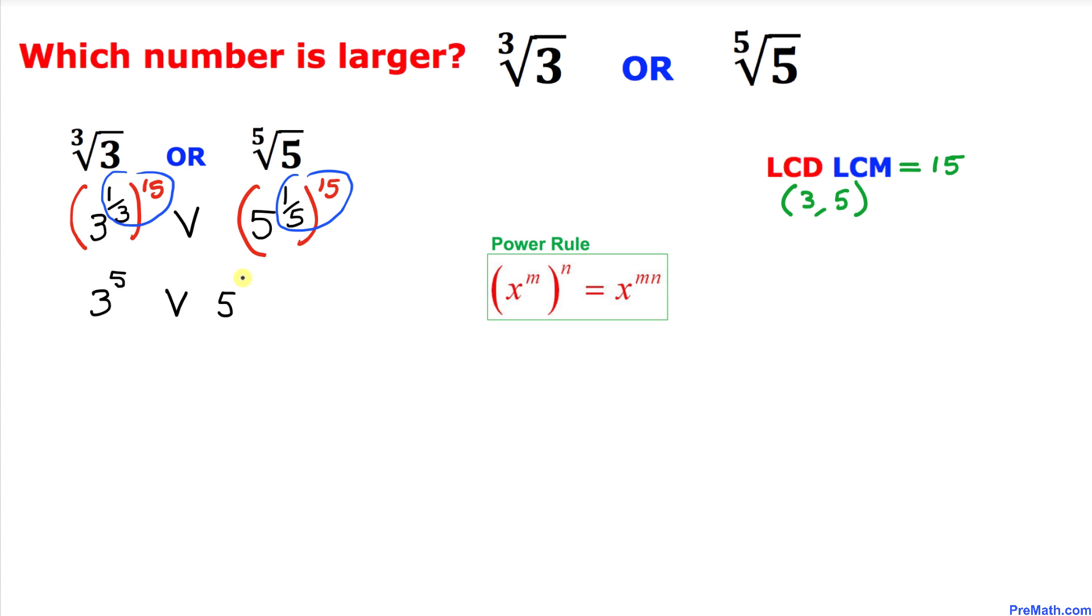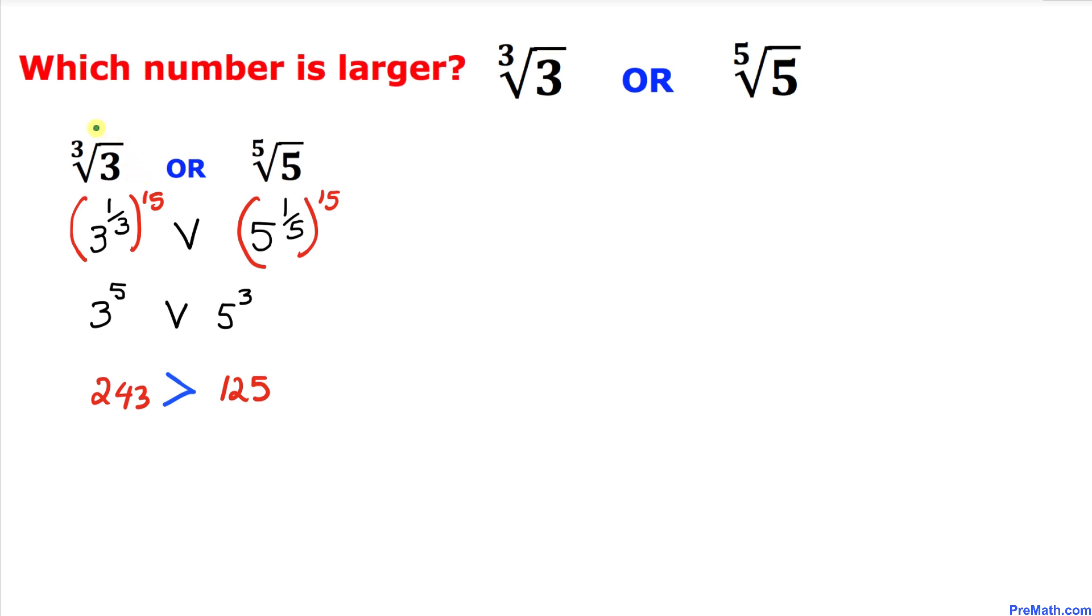Now we know that 3 power 5 is simply 243 and 5 power 3 is 125. We can see that 243 is bigger than 125, so thus we conclude that cube root of 3 is a larger number.